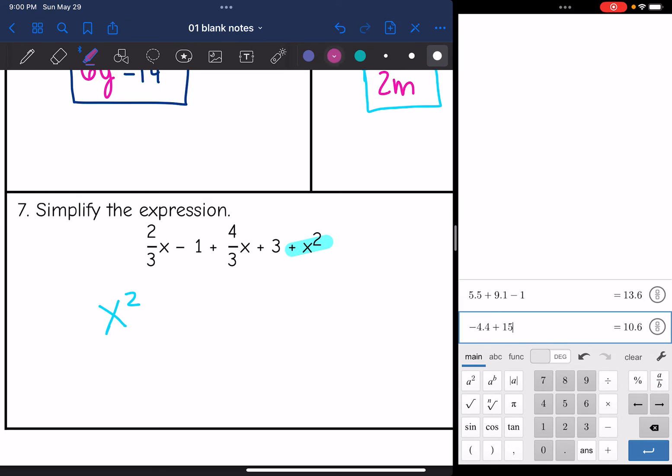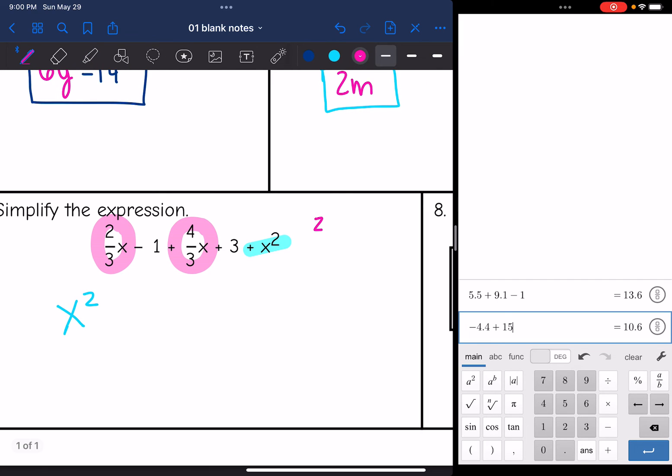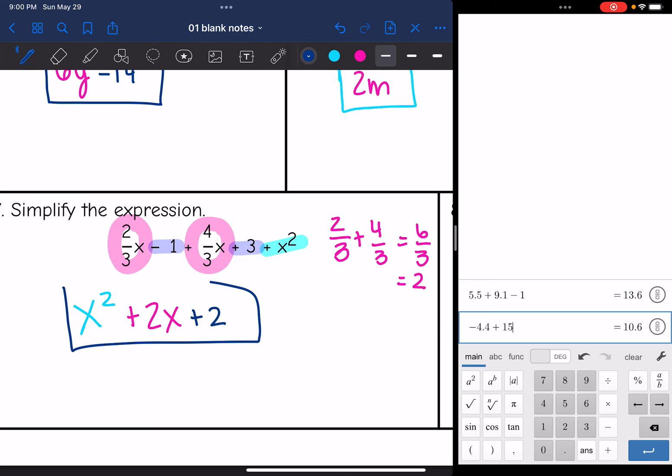And then I have 2/3X that'll combine with the 4/3X. Those have common denominators. So that should be easy to add. 2/3 plus 4/3 is 6/3 and 6/3 simplifies to 2. So 2/3X plus 4/3X is just 2X. And then lastly, I have the constants, negative 1 plus 3 is positive 2. So I'll put plus 2. So this expression simplified into X squared plus 2X plus 2.